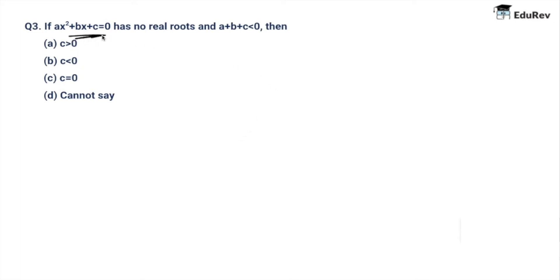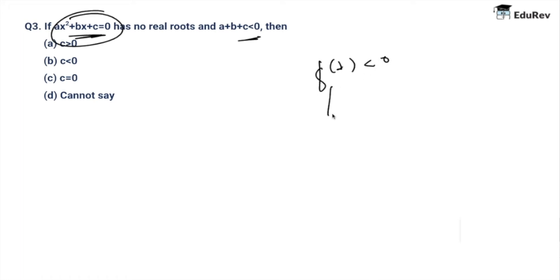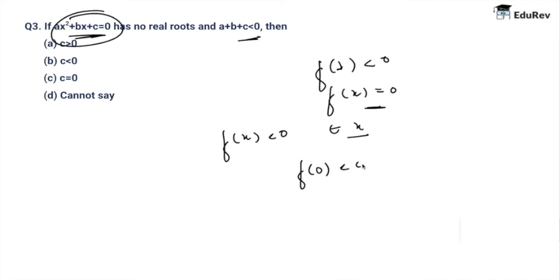Let's move to question three. If ax² + bx + c = 0 has no real roots and a + b + c < 0, which of the following is true? f(x) = ax² + bx + c. Given that f(1) < 0 and f(x) = 0 has no real roots, we can say f(x) < 0 for all x. So f(0) < 0, which means c < 0. The answer is option B.